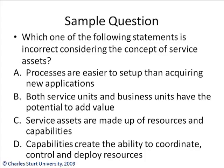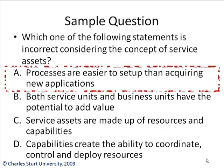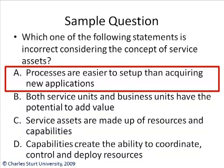Sample question: Which one of the following statements is incorrect considering the concept of service assets? Answer A: Processes are easier to set up than acquiring new applications. Answer B: Both service units and business units have the potential to add value. Answer C: Service assets are made up of resources and capabilities. Answer D: Capabilities create the ability to coordinate, control, and deploy resources. The answer is A — processes are not easier to set up than acquiring new applications. It's easier to obtain a piece of software than to design the processes to manage and maintain it.